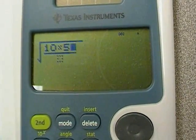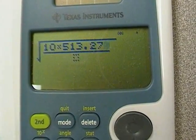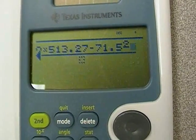Now, we can just go ahead and type in the numerator or the top of the fraction. That's going to be 10 times 513.27. We're going to subtract 71.5, and then we're going to square that. I can just use my squaring key for that.